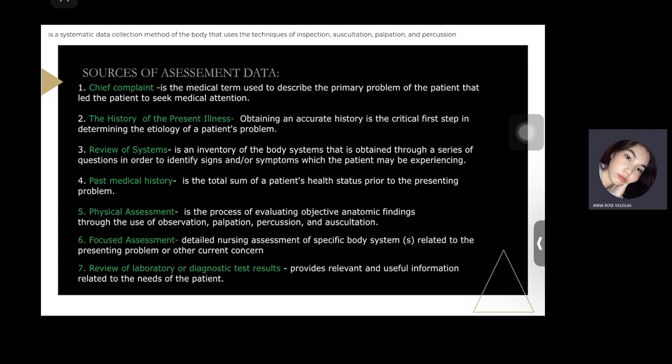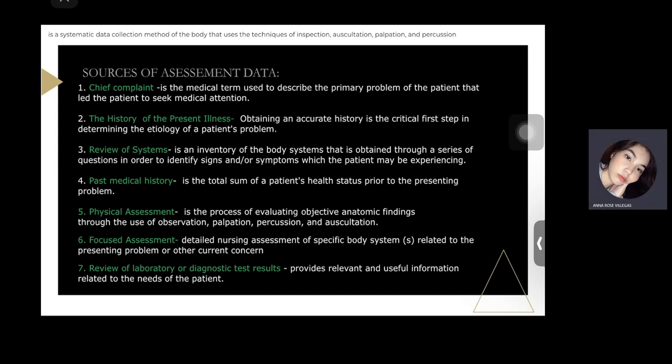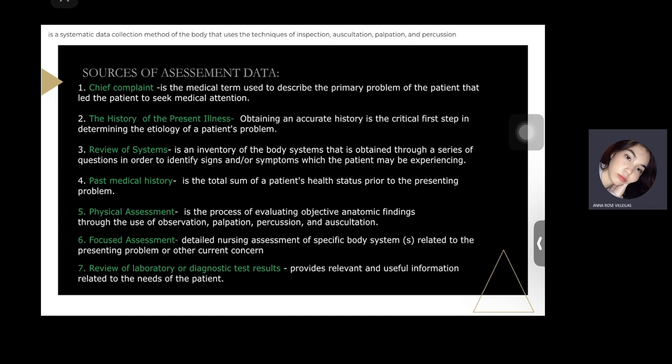Next, we proceed to physical assessment. Physical assessment is a process of evaluating objective anatomical findings through the use of observation, palpation, percussion, and auscultation. Those are the most important parts of gathering data in the assessment phase, which also includes vital signs. For the physical assessment, we also approach the patient methodologically, in the head-to-toe way, which should never be missed.